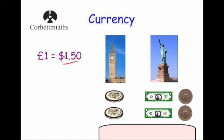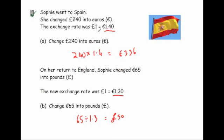To recap: if the exchange rate is one pound equals $1.50, to convert into dollars you multiply by 1.5, and to convert back into pounds you divide by 1.5. Similarly, if one pound equals 1.4 euros, to change into euros you multiply by 1.4, and to change back into pounds you divide by 1.4.